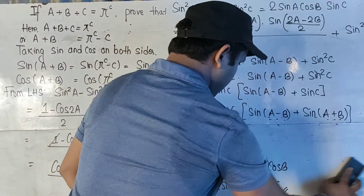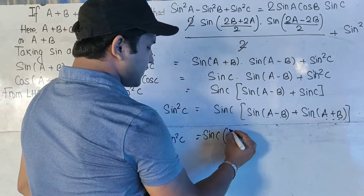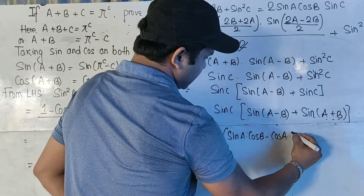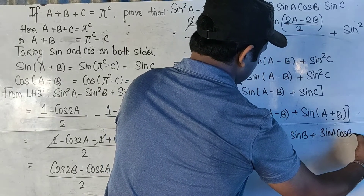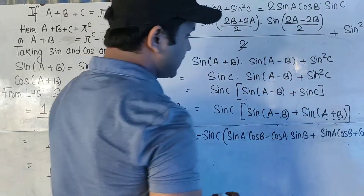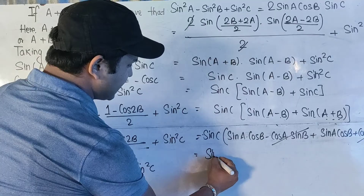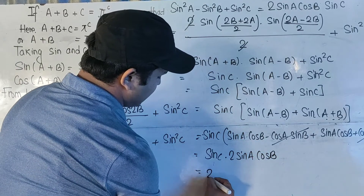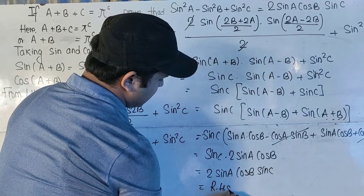Another method: write sinC as it is, then apply the formula sin(A-B) = sinA cosB - cosA sinB and sin(A+B) = sinA cosB + cosA sinB. The -cosA sinB and +cosA sinB terms cancel. Adding sinC and 2sinA cosB gives 2sinA cosB sinC. This completes the proof. Thank you everyone.